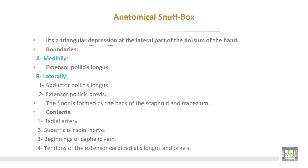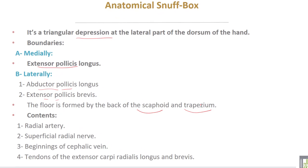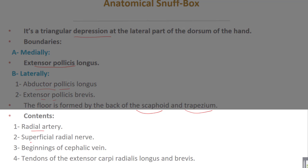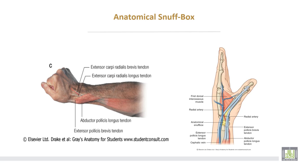Then the anatomical snuff box. It is a triangular depression at the lateral part of the dorsum of the hand. It is bounded medially by extensor pollicis longus, and laterally by abductor pollicis longus and extensor pollicis brevis. The floor is formed by the scaphoid and trapezium bones. Contents: the radial artery, superficial radial nerve, beginning of the cephalic vein, and tendons of extensor carpi radialis longus and brevis. This is the anatomical snuff box — a triangular depression containing the radial artery and beginning of the cephalic vein.